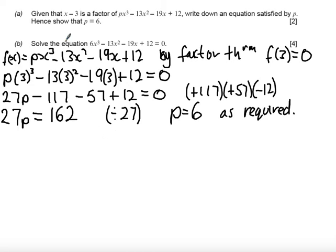So part B then says solve the equation 6x cubed minus 13x squared minus 19x plus 12 is equal to 0. Now what I already know from part A is that x minus 3 is a factor. So if we just label this part A and this part B,